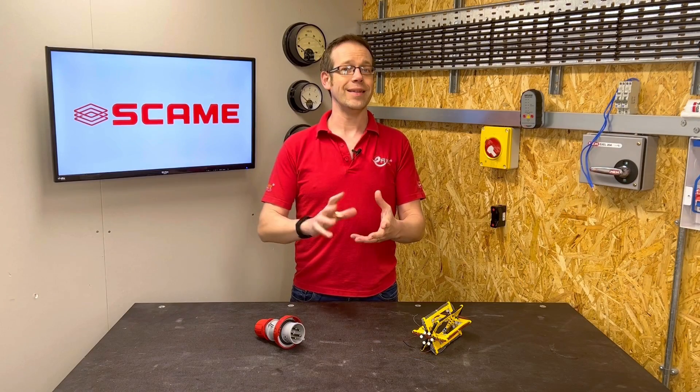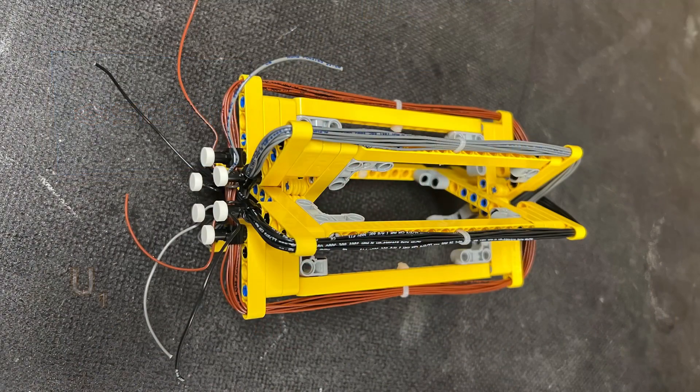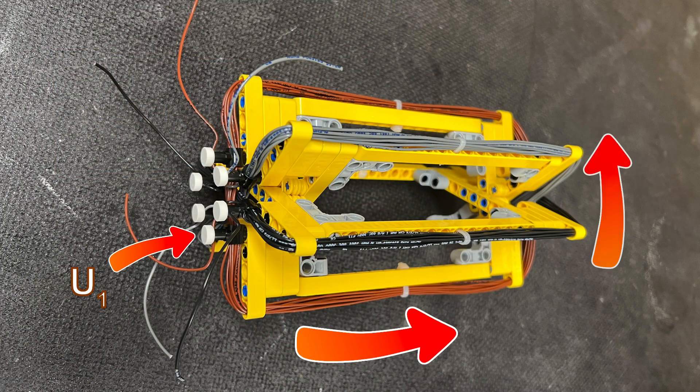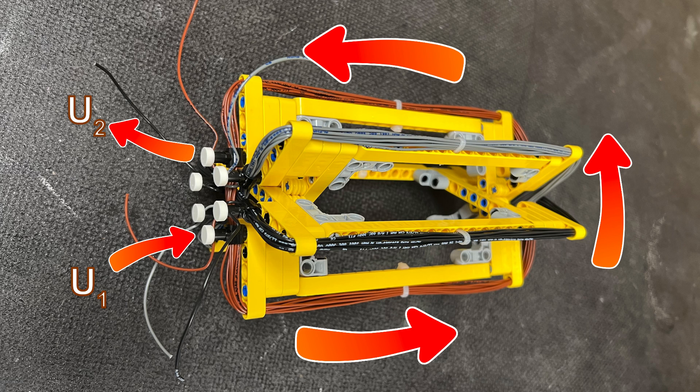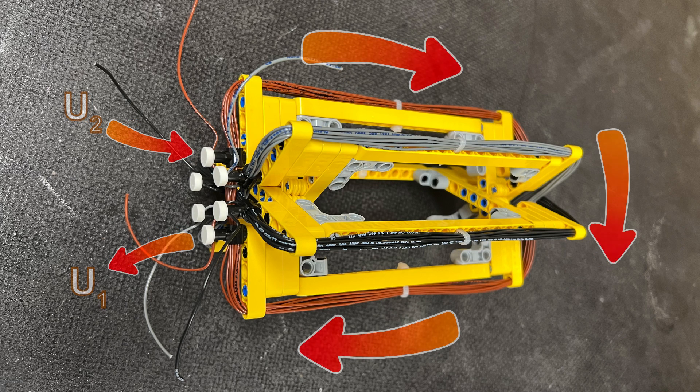So we're going to say that when the current is in the positive part of the cycle it's going into the terminal marked with a one and coming out of the terminal marked with a two. And when the current goes into the negative part of the cycle it's changed direction and goes the other way.